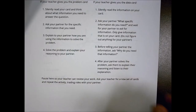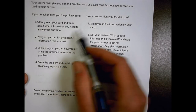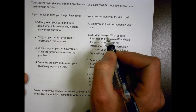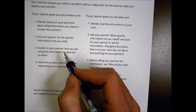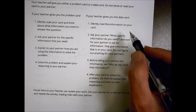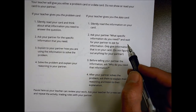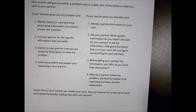In the next activity, your teacher gives you a problem card or a data card — don't show it to your partner. If you have a problem card, think about what questions you can ask your partner to solve it, and explain how you'll use that information. If you have a data card, read it silently, only share what's on your card when asked, and ask your partner why they need each piece of information.